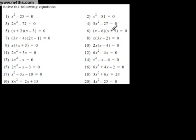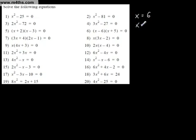This one is already factored. All we'd have to do is consider these two linear factors: either x - 6 = 0 or x + 5 = 0. So x = +6 or x = -5. If you want a quick shortcut, all you've got to do is simply swap the signs.